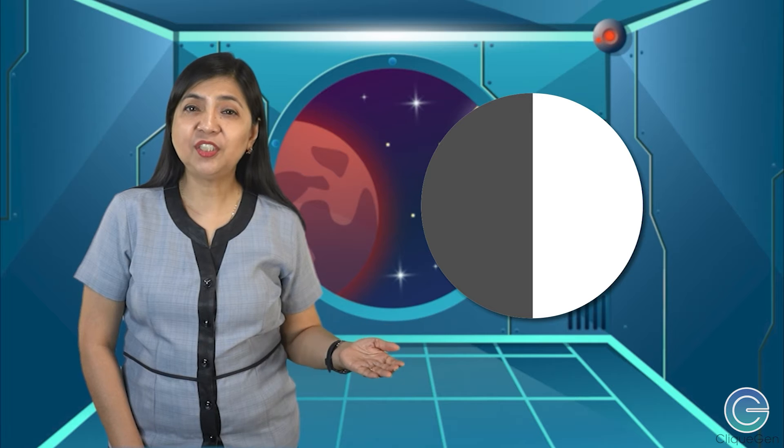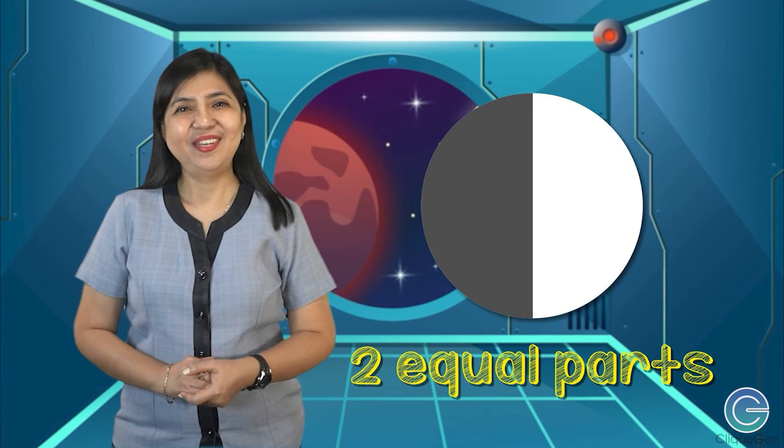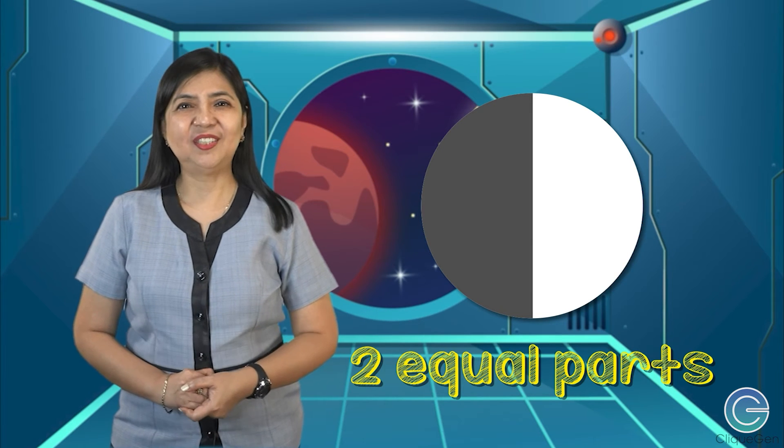Look at this pizza. This pizza is divided into two equal parts. Now, look at this circle. How many equal parts are there? Two equal parts.